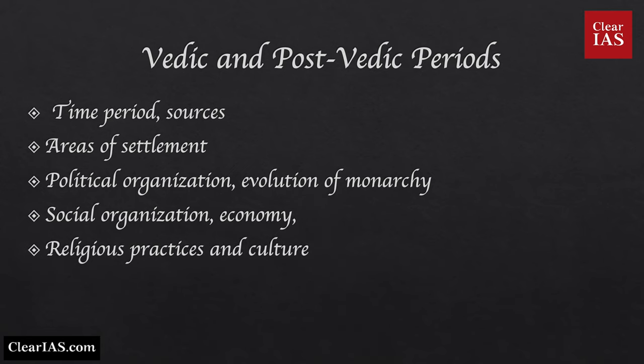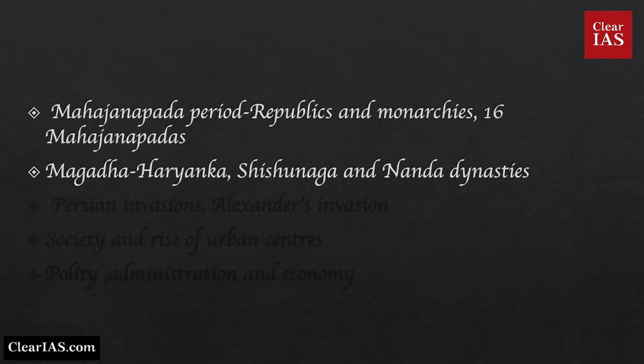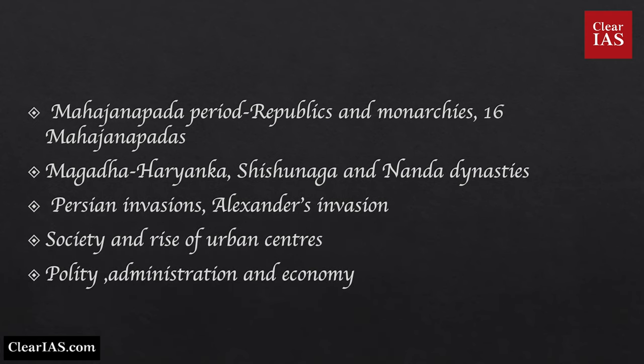Under the later Vedic period, learn about geography of later Vedic phases, areas of settlement, political system, social organization and Varna system, position of women, economy, religious practices and culture. Under the Mahajanapada period, learn about different republics and monarchies, the 16 Mahajanapadas and their capitals, especially about Magadha and its key dynasties — Haryanka, Shishunaga and Nanda — Persian and Alexander's invasions, society and rise of urban centers, polity, administration and economy.